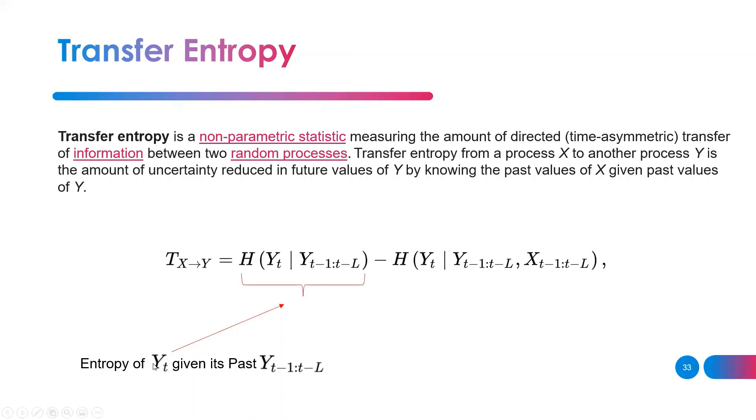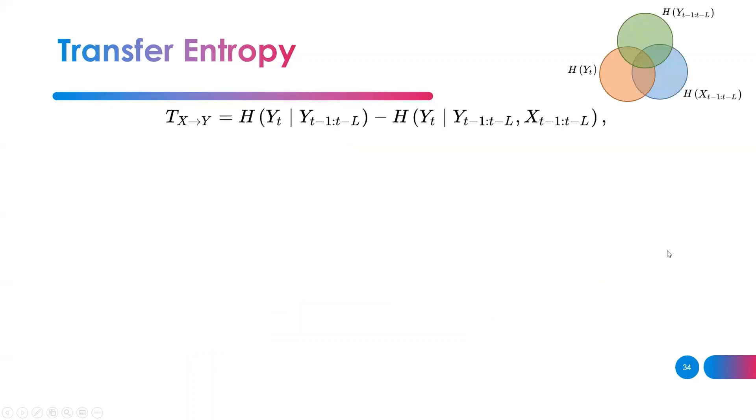I will have the entropy of Y_t given its past, and the entropy of Y_t given its past and the past of another variable. Can I put them in terms of Venn diagrams to show you how to calculate transfer entropy? Let's have a look.